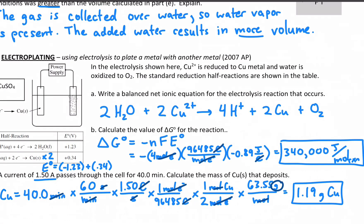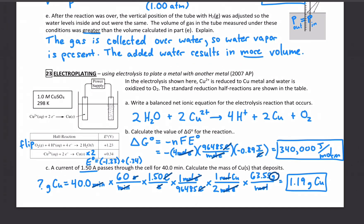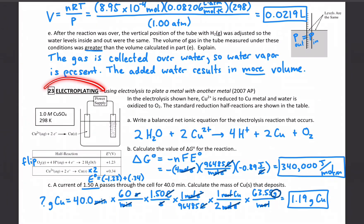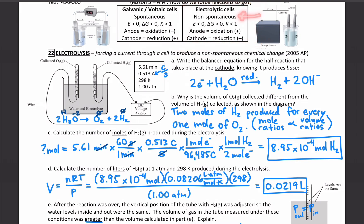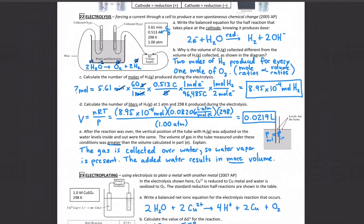That's how we use an external power supply to electroplate metals — forcing an element to form whether in the gas phase or solid phase. Both are considered electrolytic cells: non-spontaneous reactions we force with an external battery.